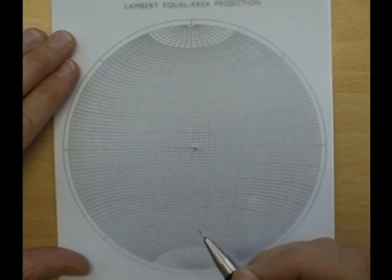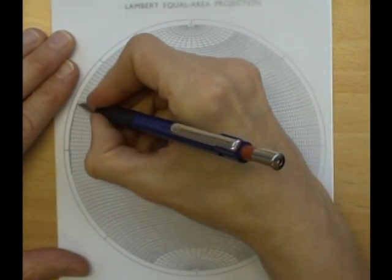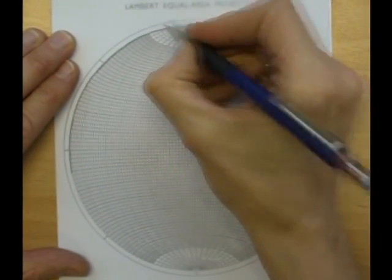To draw the outline of the StereoNet on the tracing paper, draw round the inner circle of the StereoNet.